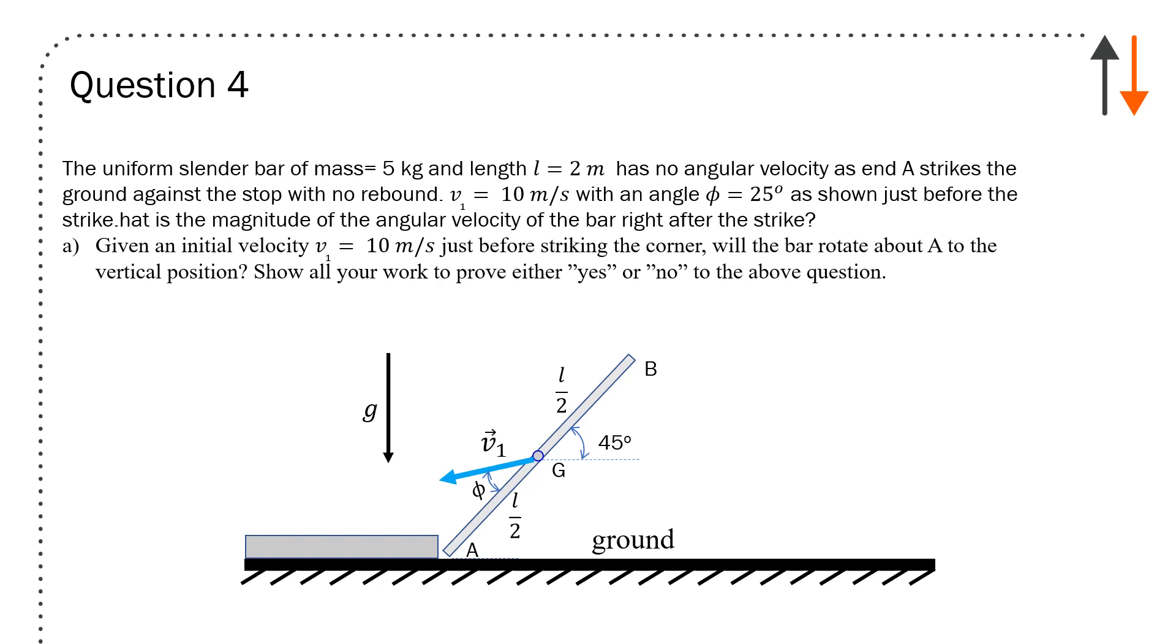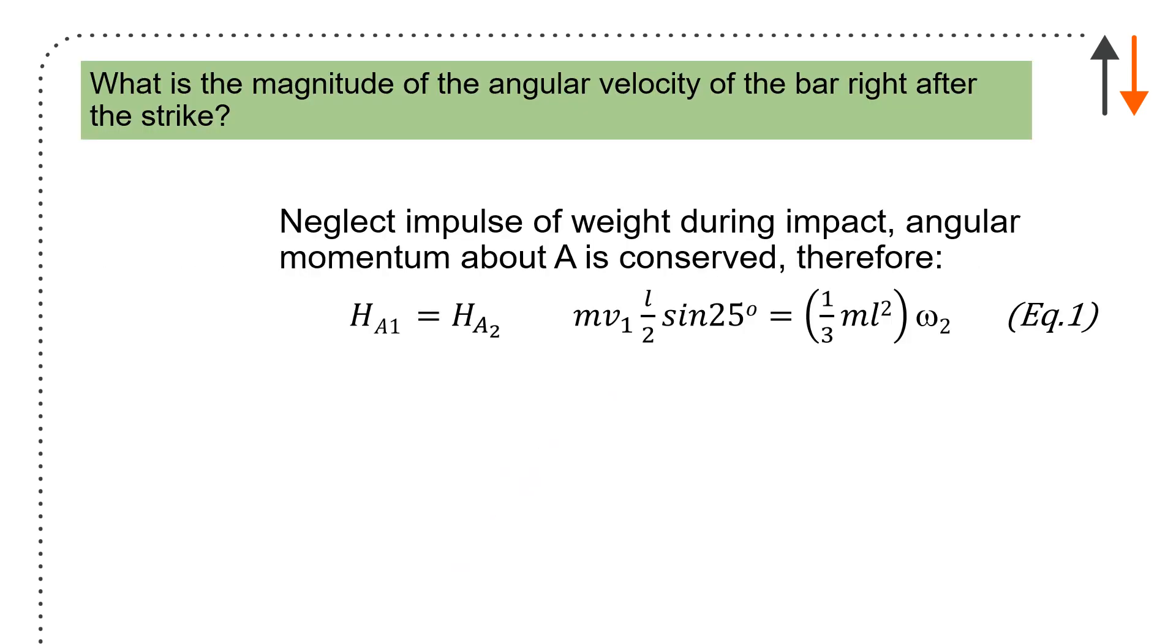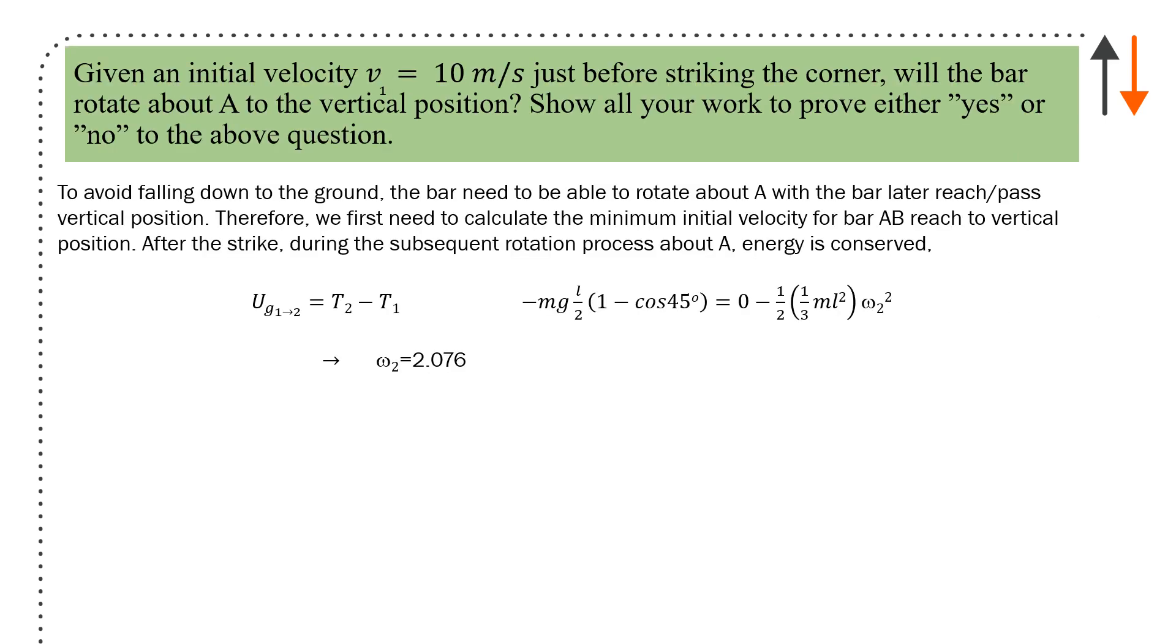What is the magnitude of the angular velocity of the bar right after the strike? You're given an initial velocity of 10 meters per second before striking. H_A1 equals H_A2: m v_1 L over 2 sine theta. Before impact, it's all translational—linear momentum times the moment arm. Afterwards, it's the angular momentum as it rotates about point A. Substituting in all the terms, you get omega_2 equals 3.2 rads per second.